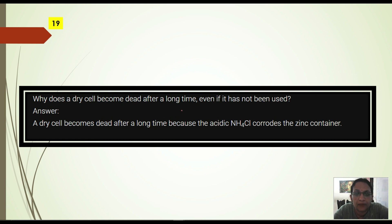Next. Why does a dry cell become dead after a long time even if it has not been used? As you may have seen that dry cell not used but it's not working. Ammonium chloride corrodes the zinc container.